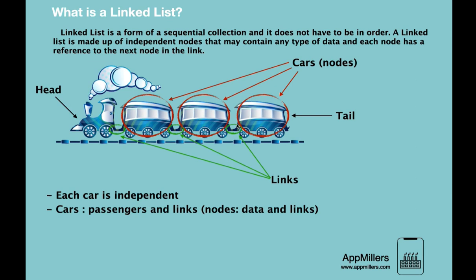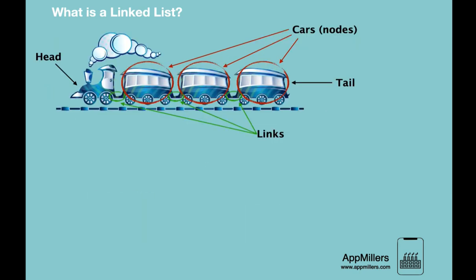So we understand the analogy of linked lists. Of course, there are some properties of trains that do not conform with linked lists. For instance, train compartments are contiguous — they are next to each other. But a linked list in memory is not contiguous; the nodes of a linked list are not contiguous.